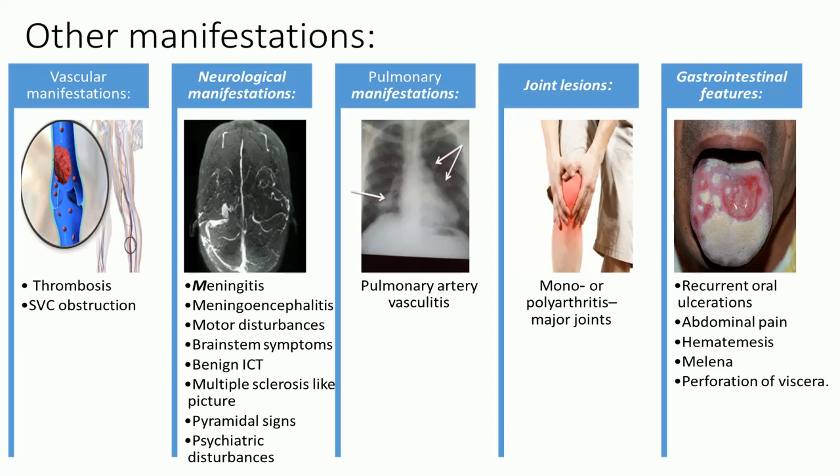Joint lesions: mono- or polyarthritis affecting major joints. The arthritis is not deforming and affects the knees and ankles. Gastrointestinal features include recurrent oral ulcerations, abdominal pain, hematemesis, melena, and perforation of viscera.